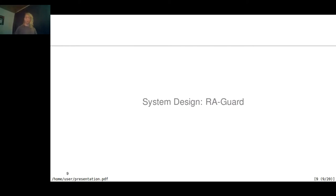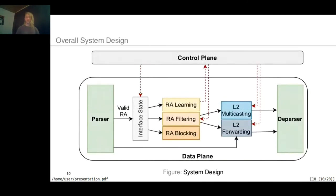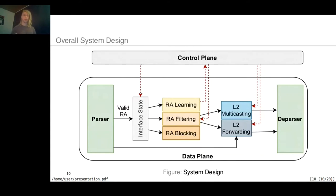The system design of our RA-GUARD implementation consists of a control plane and a data plane, which communicate with each other via the P4 runtime API — a controller API that is target and protocol independent. The main purposes of the control plane are to maintain the forwarding table and the filtering table, and to monitor incidents.